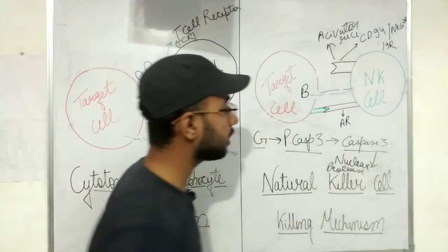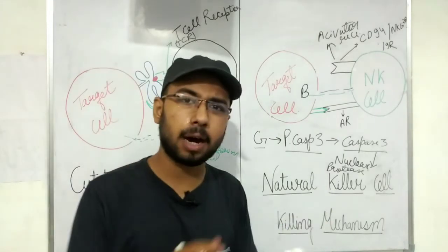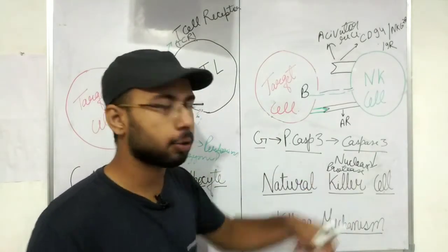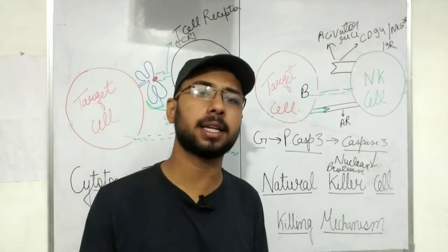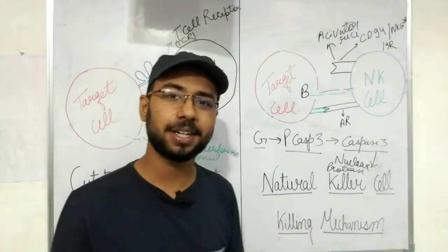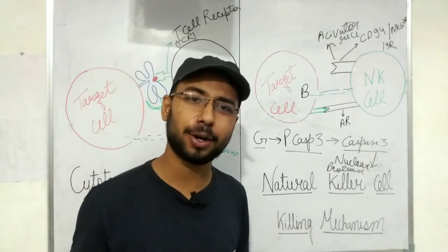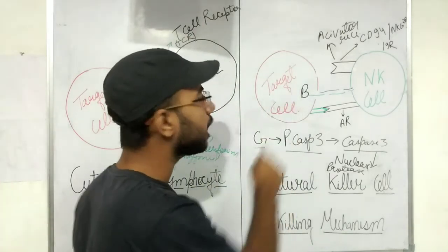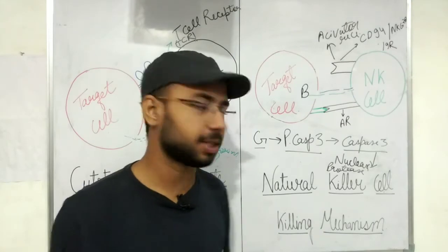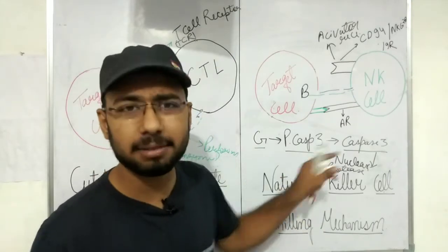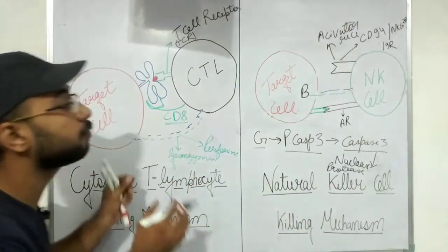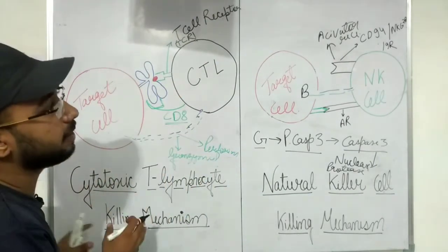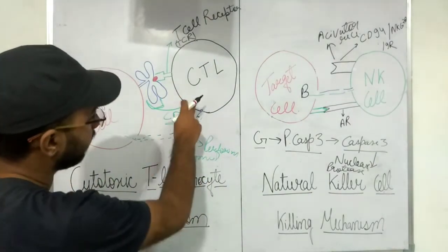Nuclease fragments the DNA and genetic material inside the target cell, while protease degrades all the proteins. If the DNA is gone and the proteins are gone, the cell dies — this is apoptosis. This killing mechanism through perforin and granzyme followed by caspase-3 activation is similar in both CTL and NK cells. The difference is in the activation: CTL requires activation through MHC-antigen binding, while NK cells are always activated and only need to confirm the absence of MHC.